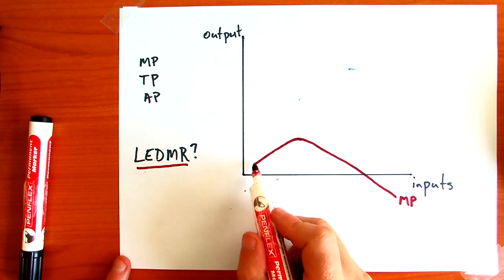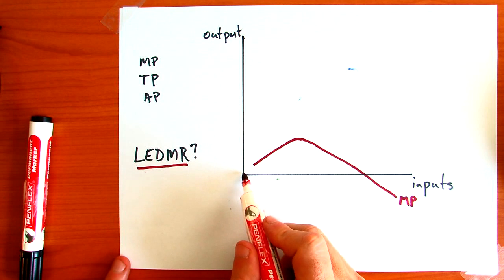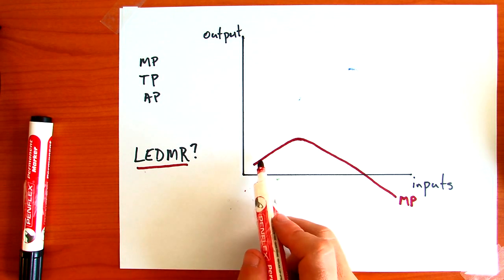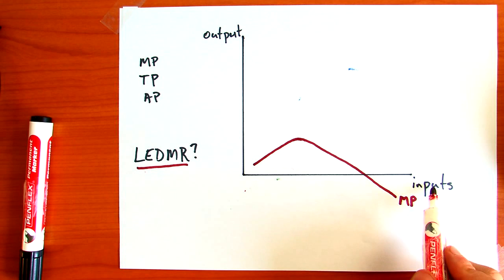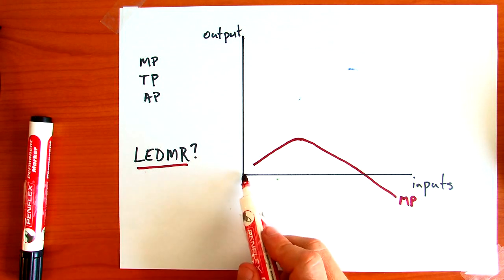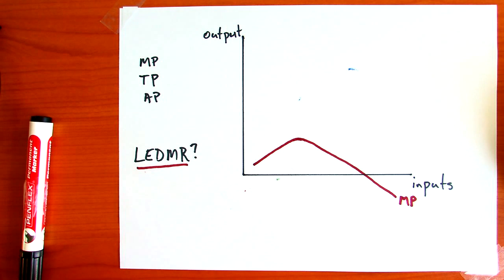Keep in mind that we don't start marginal production at the origin, because we're saying, what is the additional production by adding one input? So you can't have any additional production when your output is zero. So it doesn't go on the diagram.